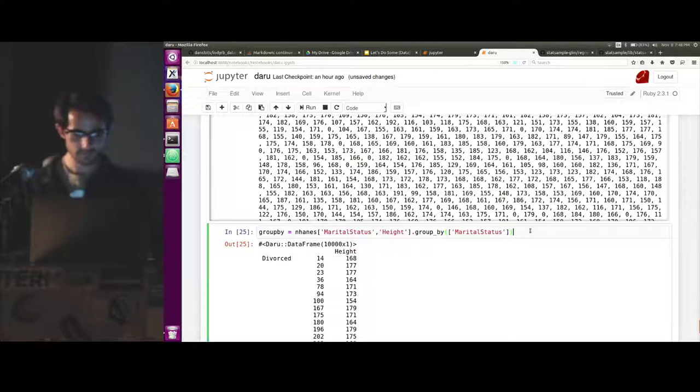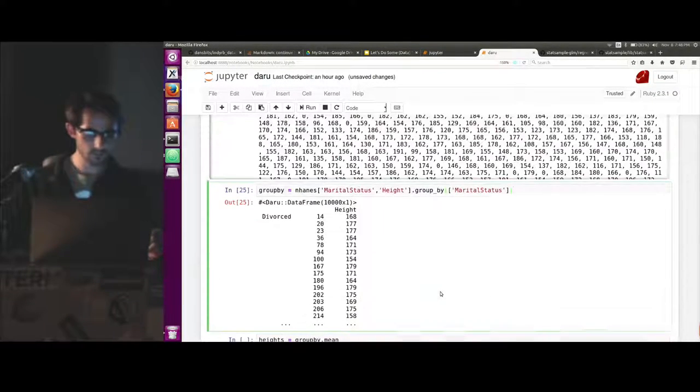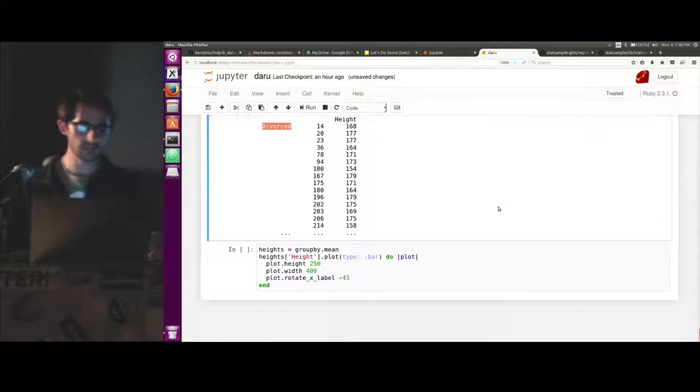And if we give it a second, it passes back another data frame, but it's kind of rearranged. So divorced is actually, or marital status is actually our index now. And it's going to use that for whatever statistic we want to calculate on this group.